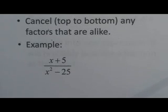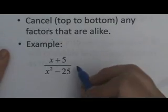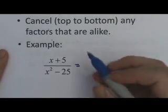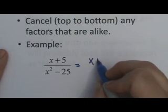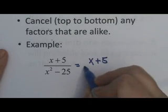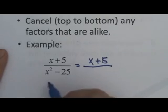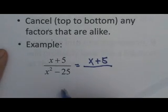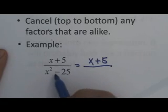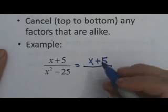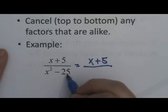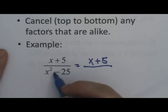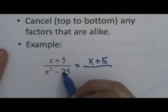Let's look at an example here. x plus 5 over x squared minus 25. Let's factor. Let's look at the top here. x plus 5. I don't think we can factor that anymore, so we'll leave it as it is. Look at the denominator. x squared minus 25. Well, x squared is, of course, squared, and 25 is 5 squared. We have a subtraction here, so this is a difference of two squares.